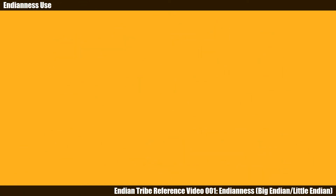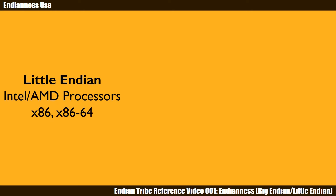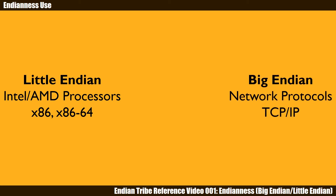The distinction between little and big Endian originates from processor designs from different shops. Today, little Endian is widely used by Intel and AMD processors running the x86 instruction set — this is incidentally why little Endian is sometimes referred to as the Intel convention. Big Endian is widely used in network protocols; for instance, when TCP sends a stream of data, the data are beamed out in big Endian format. This is why big Endian is sometimes called network byte order.